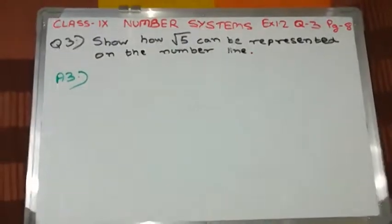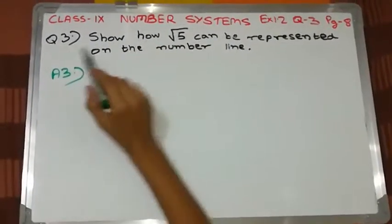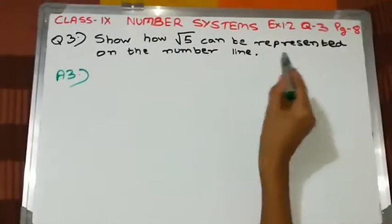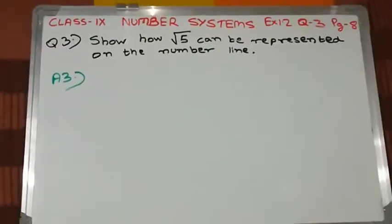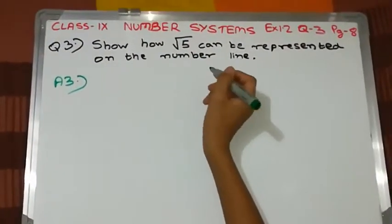Hello friends, this is question number 3 from Exercise 1.2 on Number Systems, page 8. The question is: Show how √5 can be represented on the number line.